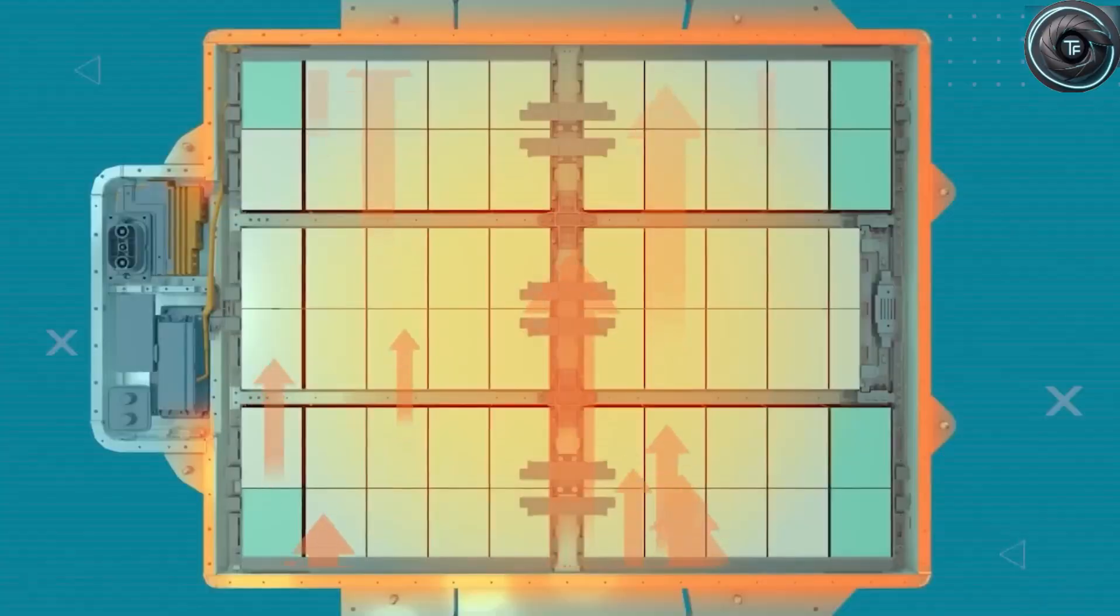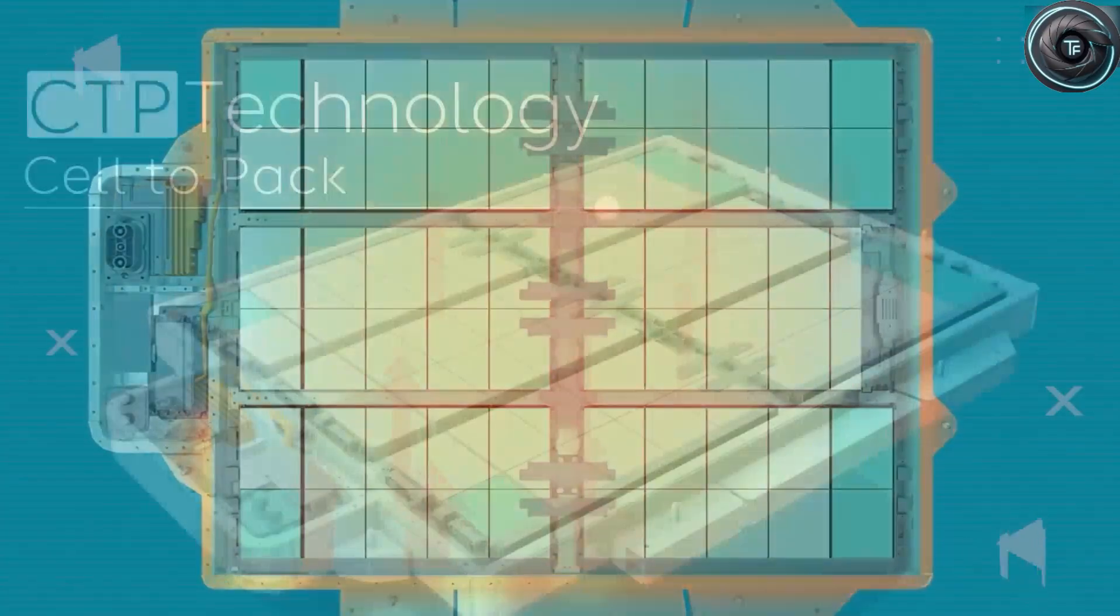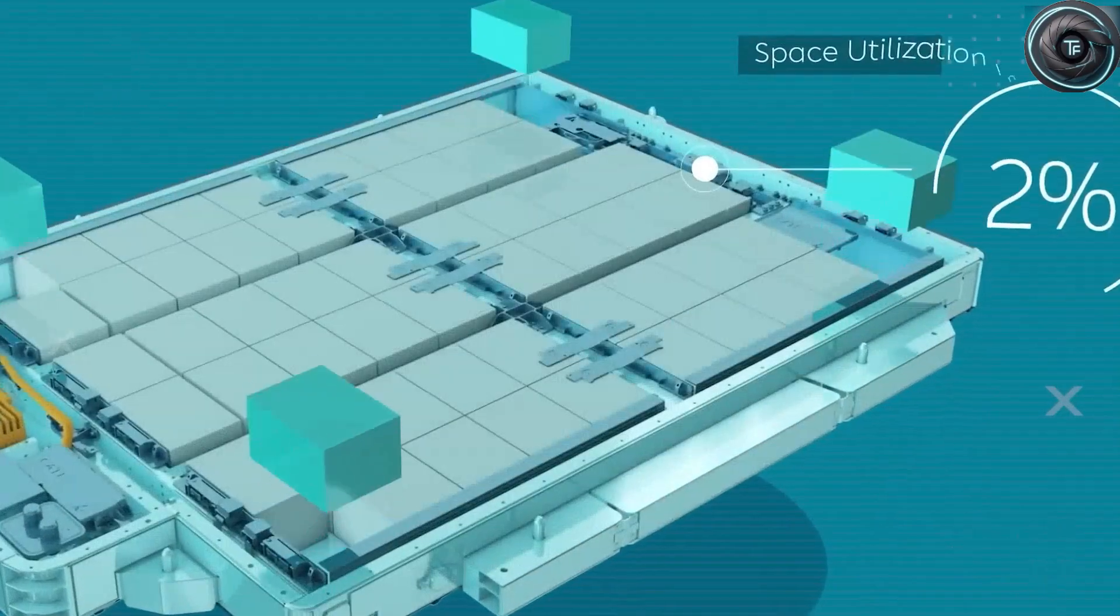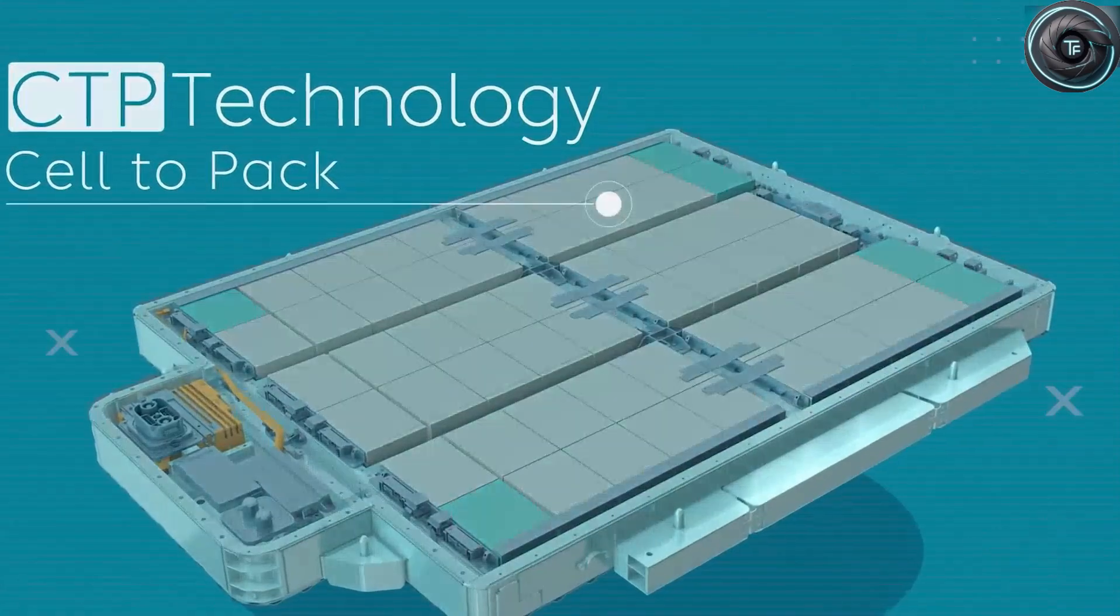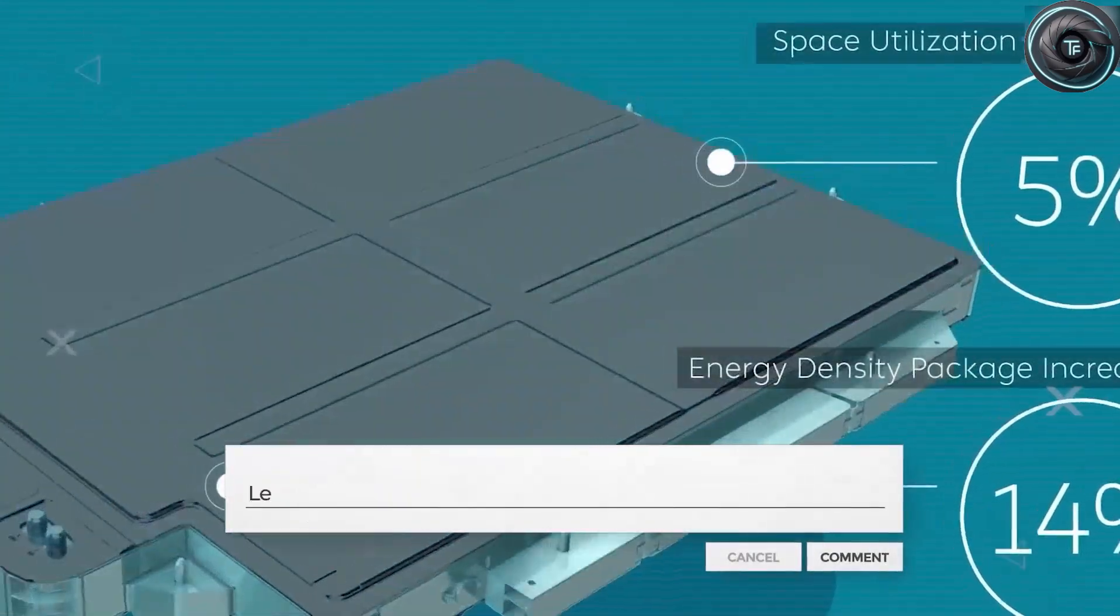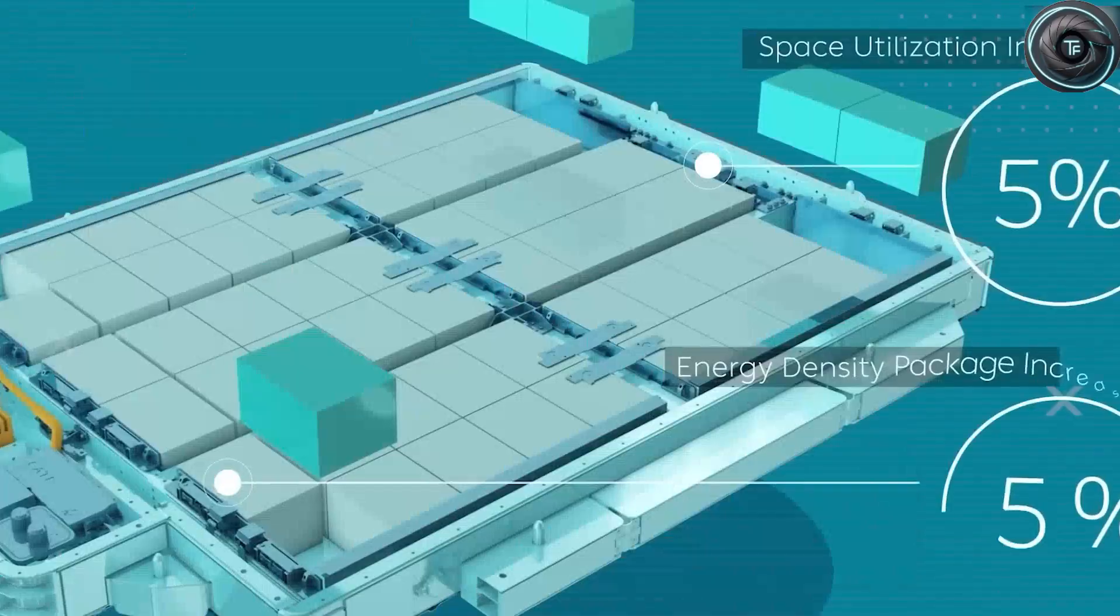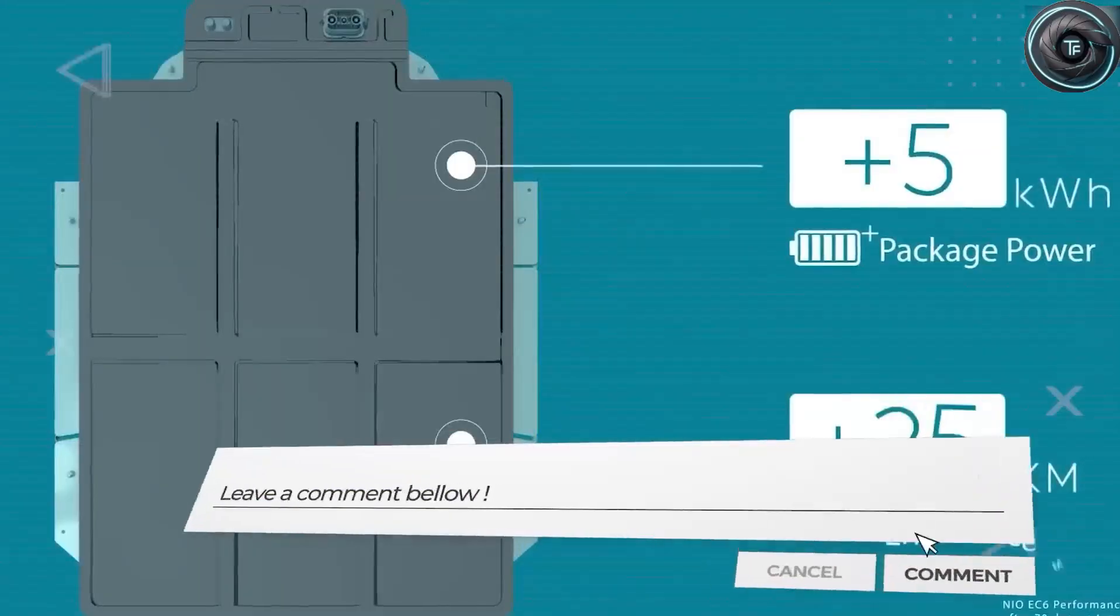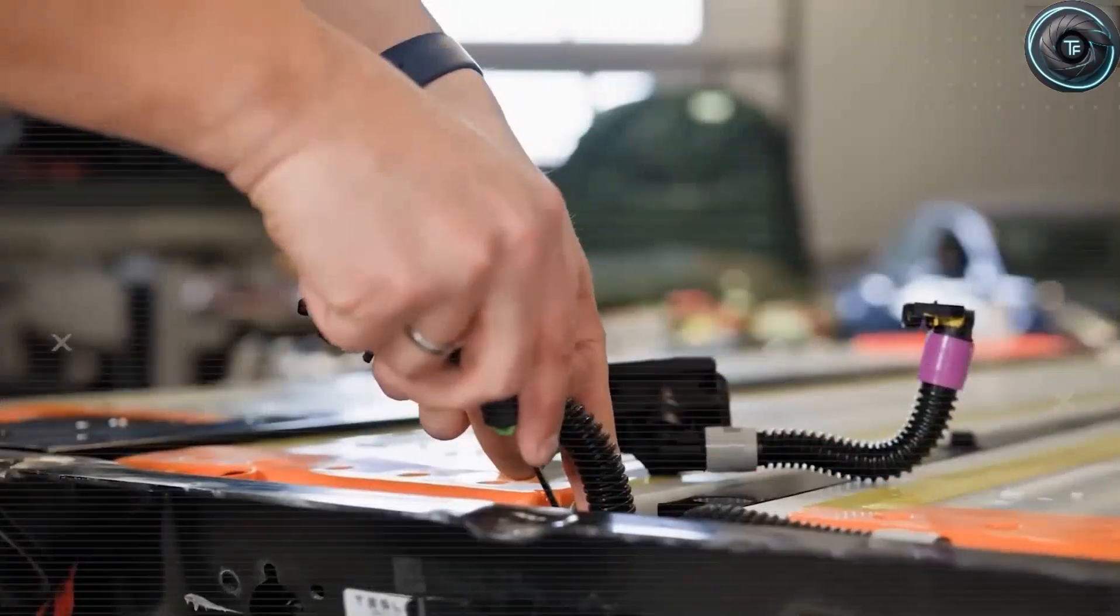Inside Giga Texas, teams of chemists, software engineers, and robotics experts quietly built what insiders called Project Helios, named after the Greek god of the sun. The goal? To create a battery that charges in minutes, lasts for decades, and costs less than a used iPhone. Sounds impossible, right? But if there's one thing Tesla does best, it's turning the impossible into production.